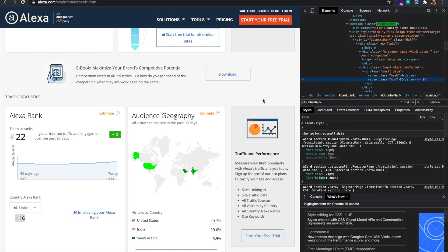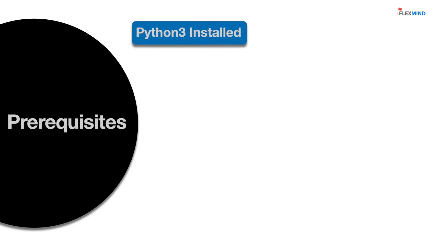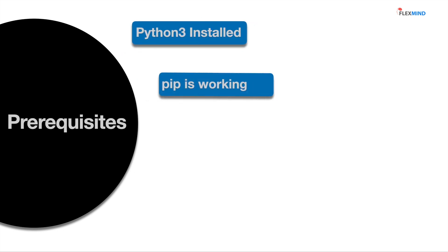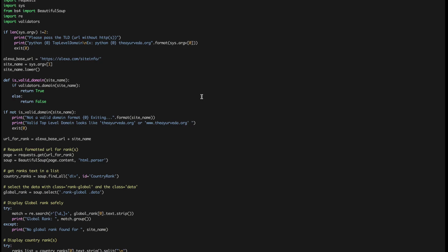Personally I don't want to open the website to check the Alexa rank for one or more websites — I'd rather use a Python script to do that for me. What you need before making this code work: Python 3, pip, and a few modules you need to install: requests and BeautifulSoup4.